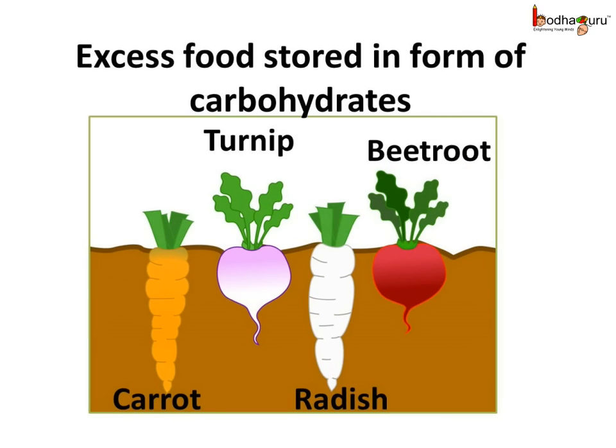In a few plants, the extra food is stored in the taproot for the future, like the carrot, beetroot, radish, turnip, etc. The food is stored in the form of carbohydrates like sugar, starch, etc. We also eat these roots as vegetables because they are a good source of carbohydrate.